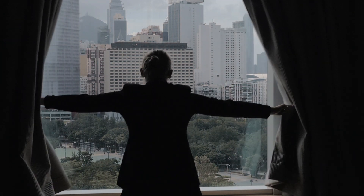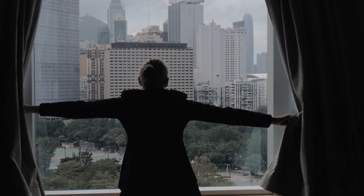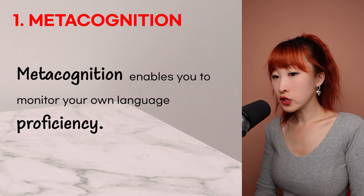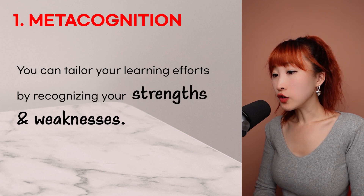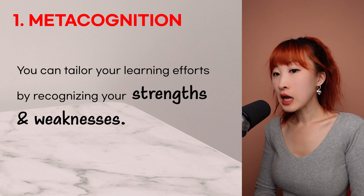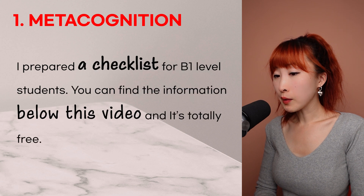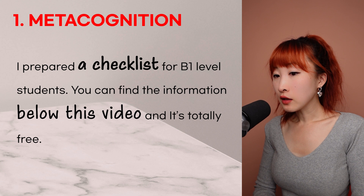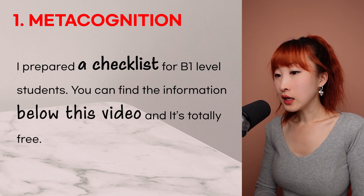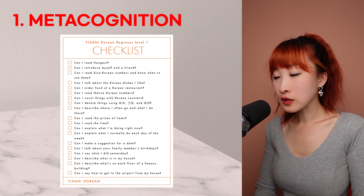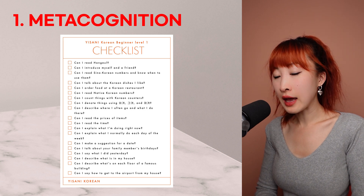First, know what you know and know what you don't know. Metacognition enables you to monitor your own language proficiency. You can tailor your learning efforts by recognizing your strengths and weaknesses. I prepared a checklist for beginner level 1 students — you can find the information below this video and it's totally free. If you are ready with the checklist, ask yourself and be honest with the answer.